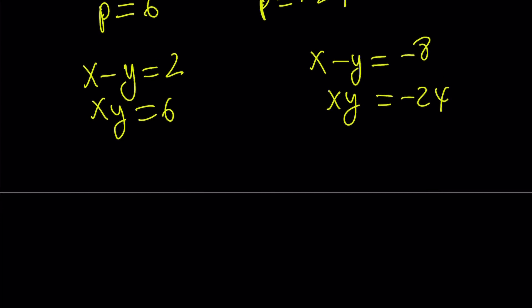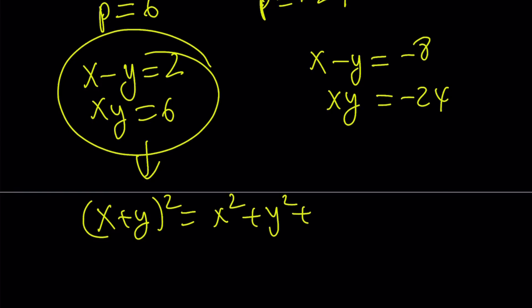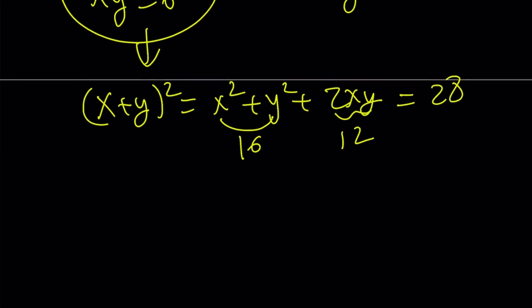And from here, you can manipulate in so many ways. Let me just show you one and the other is going to be very similar. You can kind of write the x plus y squared as x squared plus y squared plus 2xy. I know that this is equal to 16. And I know that xy is 6. So this is going to be equal to 12. And the sum is going to be 28.